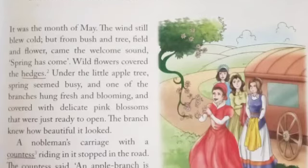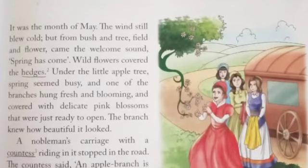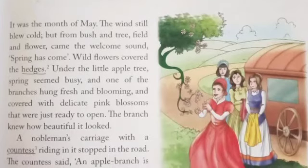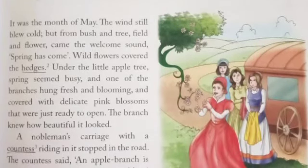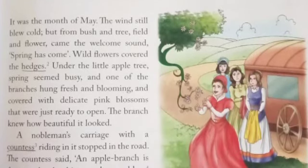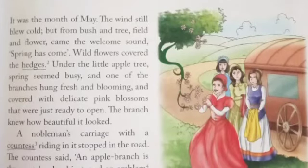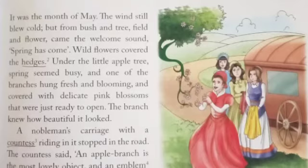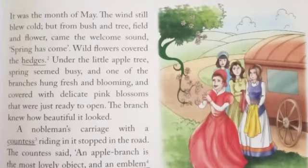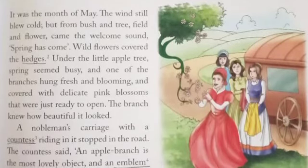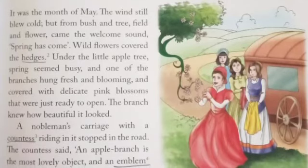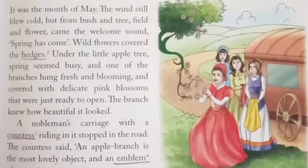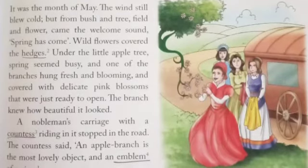A nobleman's carriage with a countess riding in it stopped in the road. The countess said an apple branch is the most lovely object and an emblem of spring. He also explained about the spring with the apple branch.